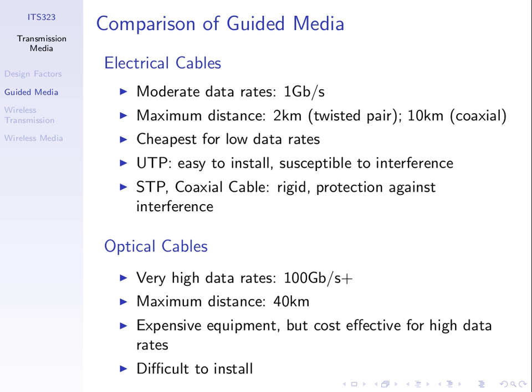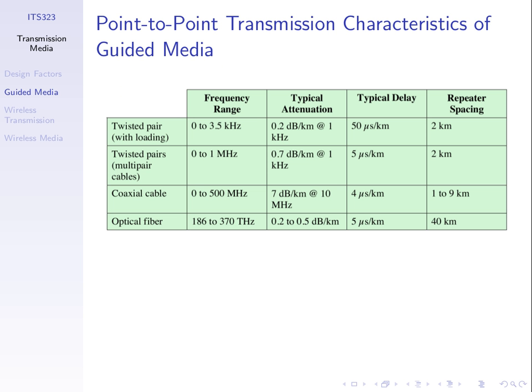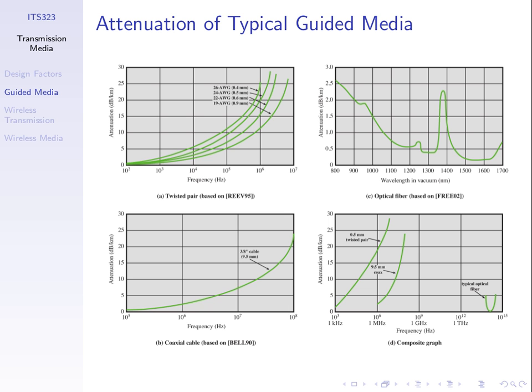A very quick coverage of three common wired transmission media. What I want you to know is the general trade-offs: which ones are typically faster, which ones cover the most distance, and what's the advantage of shielding versus no shielding. The remaining slides give more technical details on exact frequency ranges, attenuation, and delay across different systems.